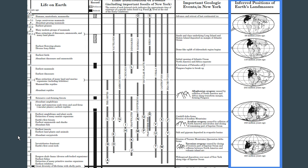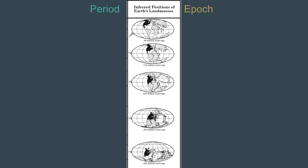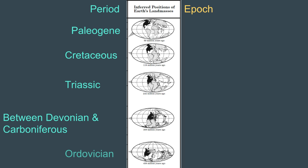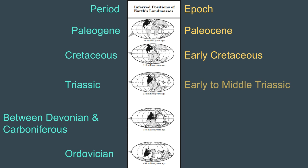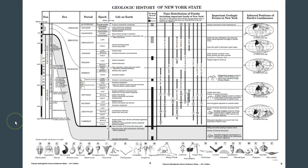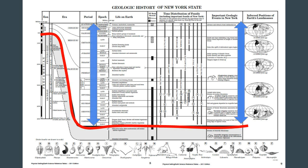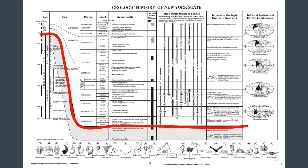Now let's take a closer look at inferred positions of Earth's land masses. This will give you some time frames here for your periods and epochs. Taking a look at the big picture here, you can see that almost all the important events that we have happened during the Phanerozoic Aeon. And during the Precambrian, this is what happened.